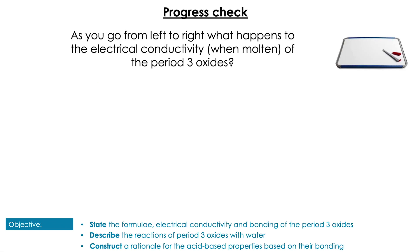Let's try a couple of questions. What happens to the electrical conductivity when molten in the Period 3 oxides? Pause the video to have a go. Yes, hopefully we realize that as we go across the group, we're going from ionic to covalent. Ionic is going to conduct when molten; covalent will not. So we're going to see a general trend of decreasing molten electrical conductivity as we go across Period 3.